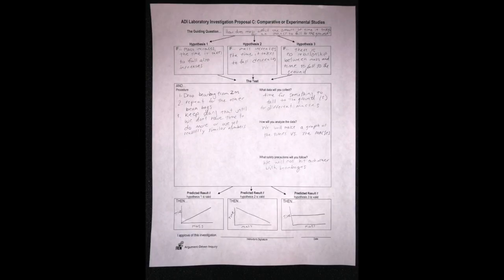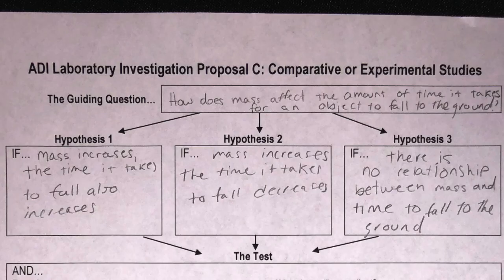This student sample investigation proposal is for the lab on the effects of mass on free fall time. Mass can really only have three possible effects on the amount of time it takes to free fall. The first is that if mass increases, then the time it takes to fall would also increase. If mass increases, the time it takes to fall could decrease. And mass could have no impact on the time it takes to free fall.